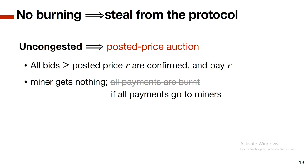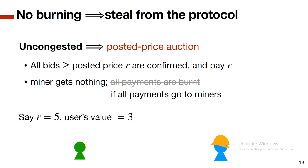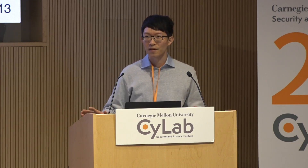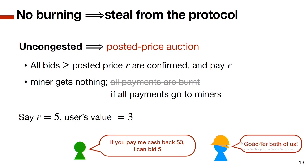If payment is not burned and instead goes to the miner, consider this example: the posted price is five and a user has value three. If everyone behaves honestly, the user bids three, which is below the posted price — no one is confirmed and no one gets anything. However, the user can tell the miner 'if you give me a cashback, I'll overbid at five.' This is good for both. Since the network is uncongested — supply exceeds demand — including one more user doesn't harm others, so no one is harmed but value is stolen from the protocol.